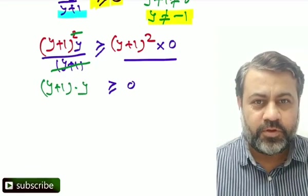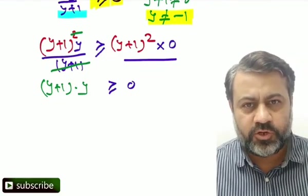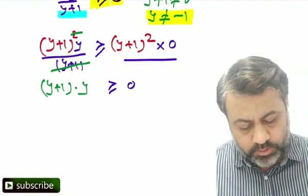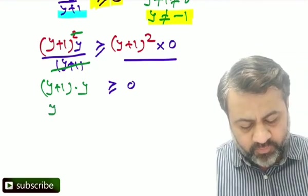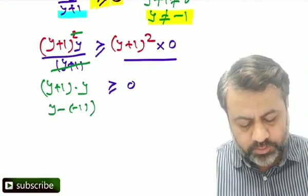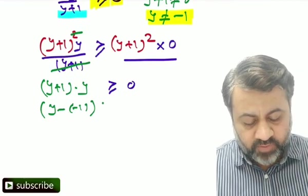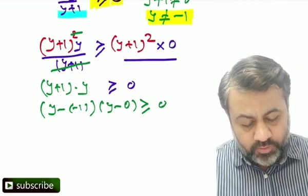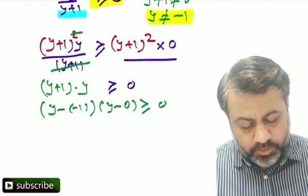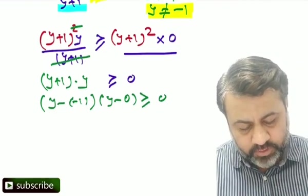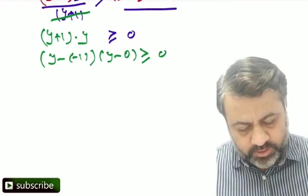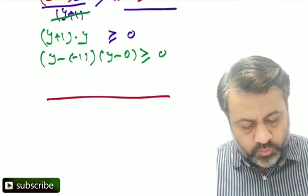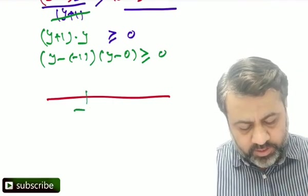Now most of you must have realized we need to use wavy curve method. What we do here is I just write one more step: (y-(-1))(y-0) has to be greater than 0. Now we draw the loop and let's understand how to take it further. We get on the loop we take value minus 1 and 0.